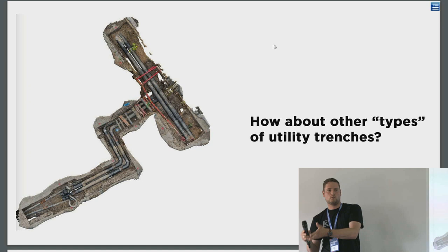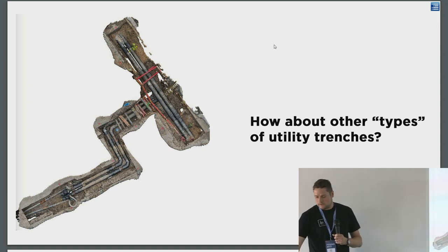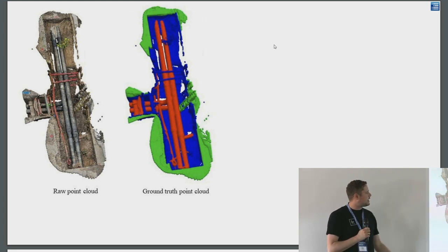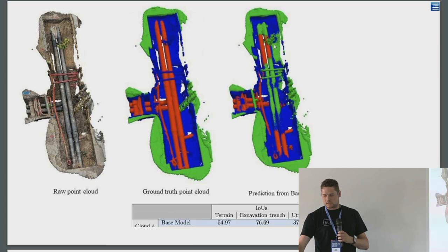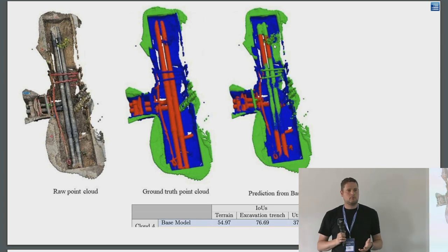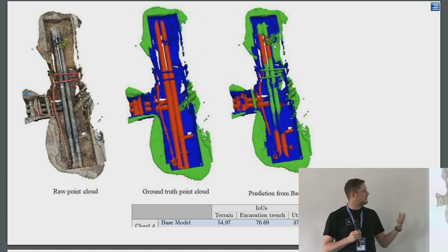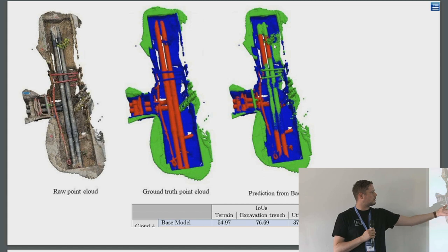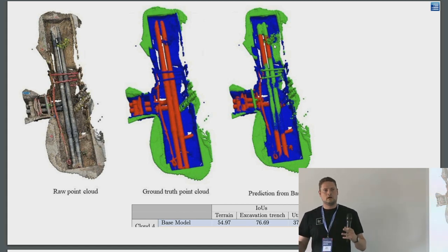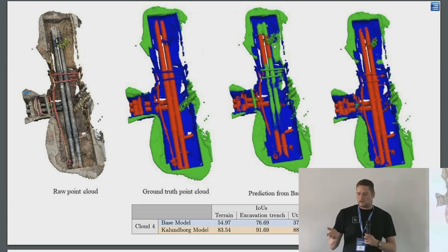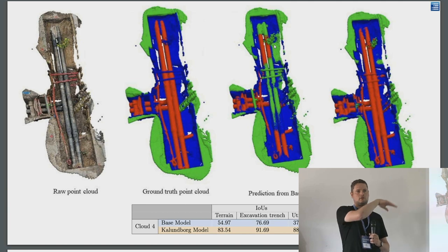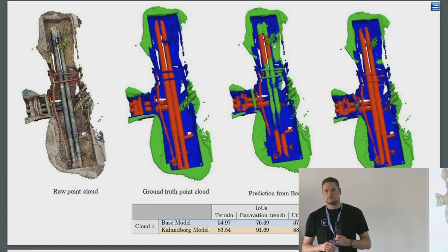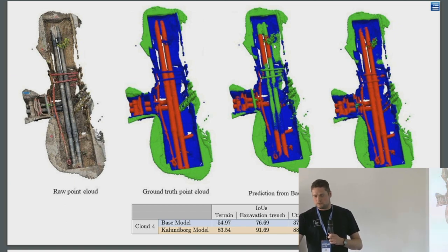This is a sample of a district heating trench with the ground truth annotated as test data. Right out of the box, using just the base model trained on smaller water utility trenches, it didn't perform well — it had a lot of struggle recognizing the pipes because the appearance is quite different. But we found that with the base model already in place, adding just 21 more point clouds from district heating trenches to the training set improved the results a lot. We think that's pretty cool.